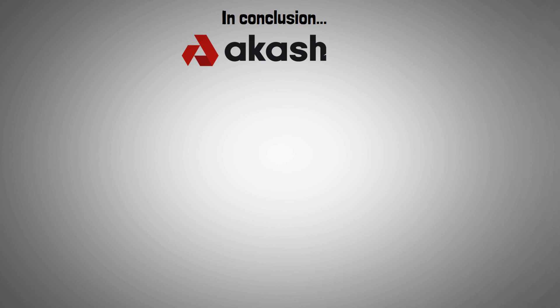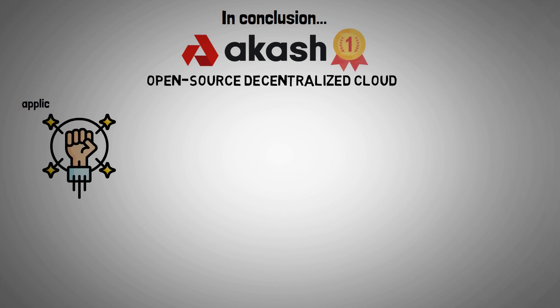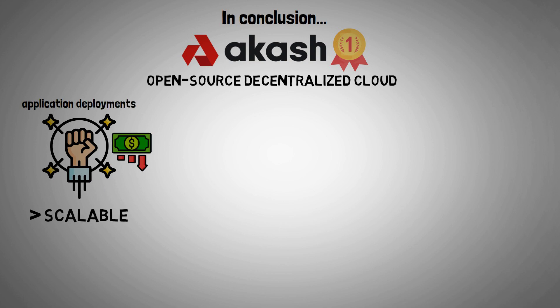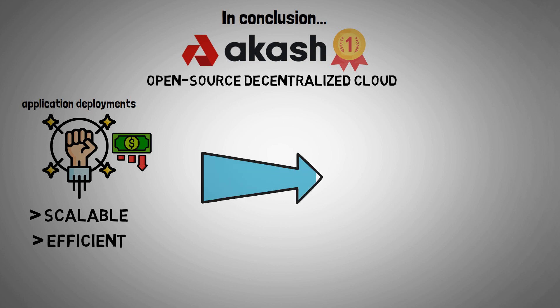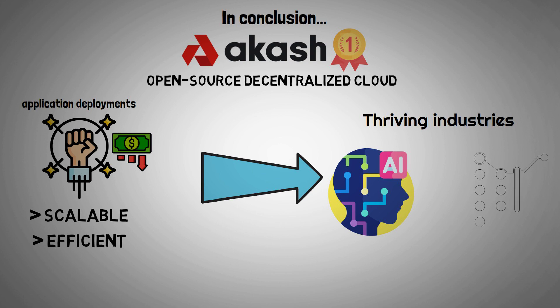In conclusion, Akash Network, the first open-source decentralized cloud, enables superior application deployments at a low cost. These application deployments are also scalable and efficient, making them appropriate for thriving industries. This includes artificial intelligence, machine learning, and DeFi.